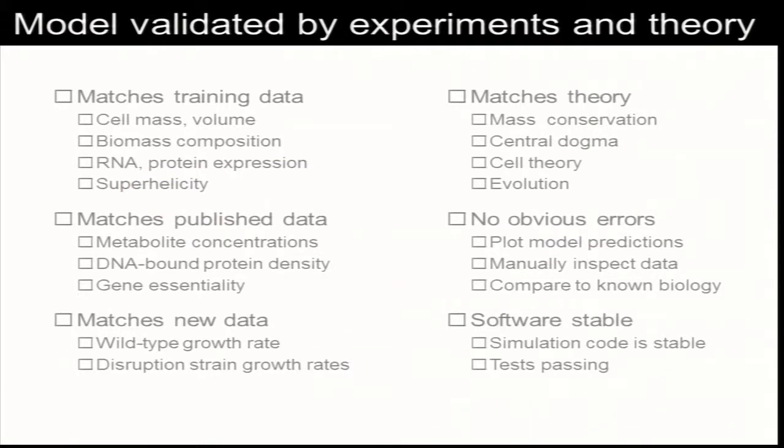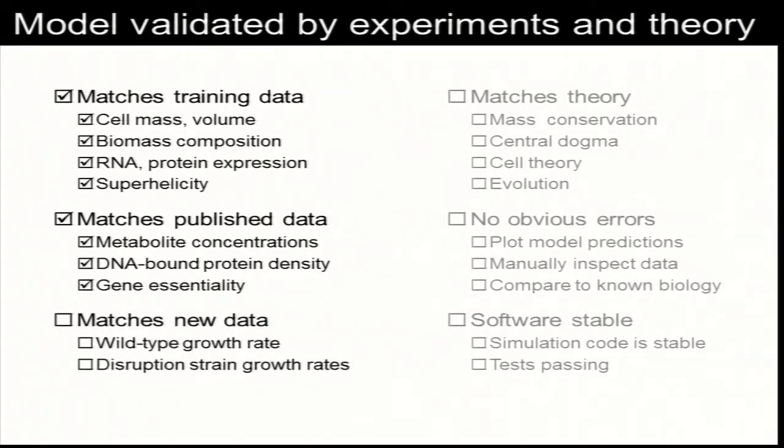I just want to quickly give you a sense of how we think about validating these models and the kind of experimental data that we use. The basic idea that we've been pursuing is to develop a long checklist of individual validation steps, each of which gives you a little bit of confidence in the model predictions, but together give you a lot. The first set of items on our checklist is to make sure that the model matches all the data that you use to train it, which is basically just to say that whatever you put into the model you can get out. Then, of course, the next thing you want to do is make sure that the model matches other data which has been published by other groups but which you didn't use to train the model.